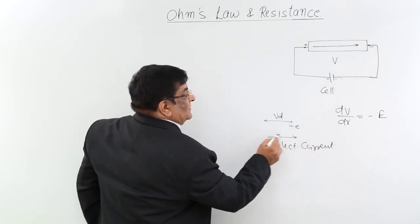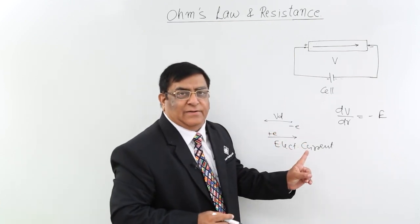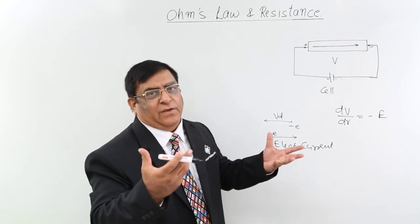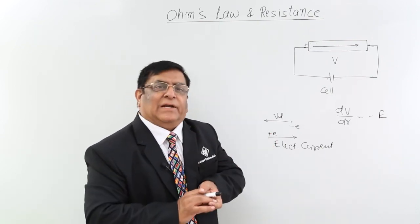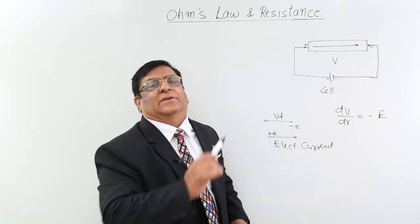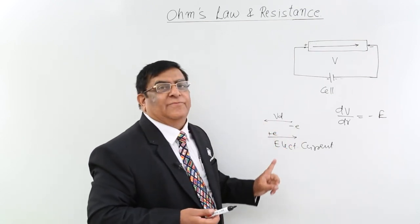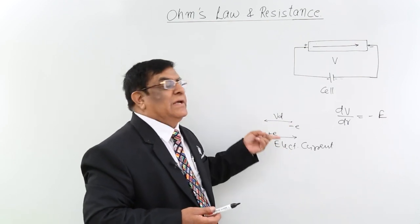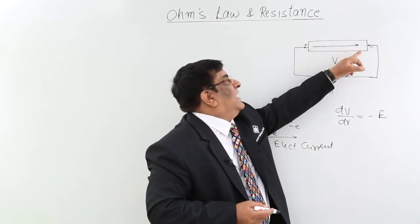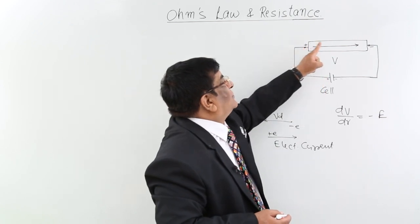Theoretically, the direction of motion of positive charges is known as the direction of current. You may object that positive charges actually do not move. Then we change our terms: the direction opposite to that of negative charges is the direction of electric current. So electrons move in this way, and the direction of electric current is opposite to it, because theoretically this is the direction of motion of positive charges.